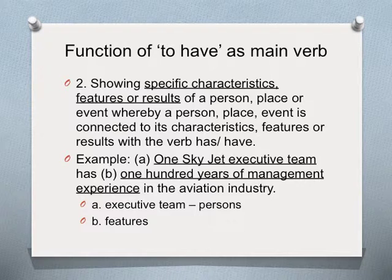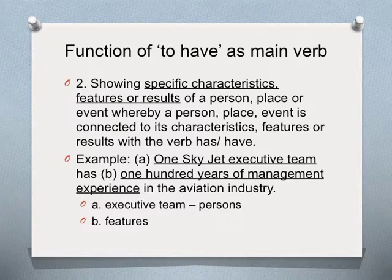The second function of to have as a main verb is to show specific characteristics, features, or results of a person, place, or event, in which a person, place, or event is connected to its characteristics, features, or results with the verb has or have. An example of this: the SkyJet executive team has 100 years of management experience in the aviation industry.